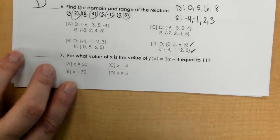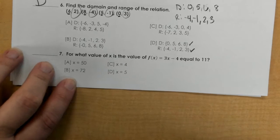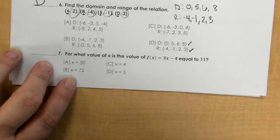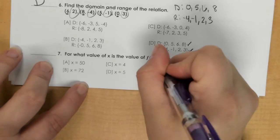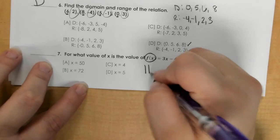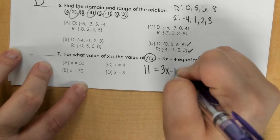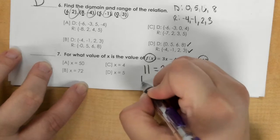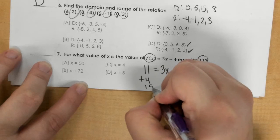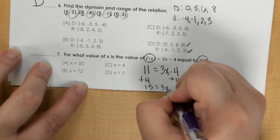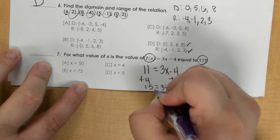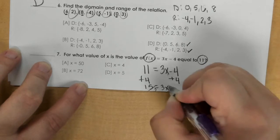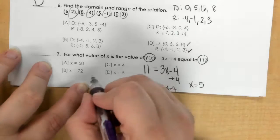In number 7, for what value of x is the value of f(x) = 3x minus 4 equal to 11? So this 11 you're plugging in for this part right here. So 11 equals 3x minus 4, but I need to add 4 to both sides, get 15, and then I divide both sides by 3 and x equals 5, so D.